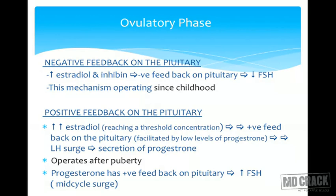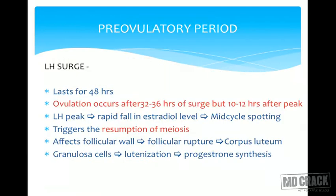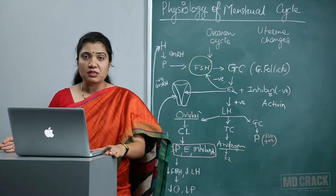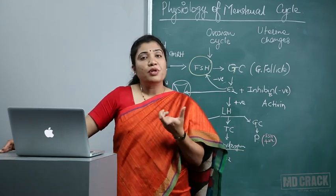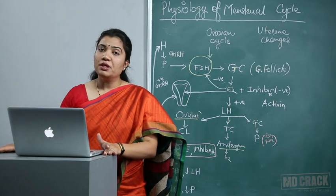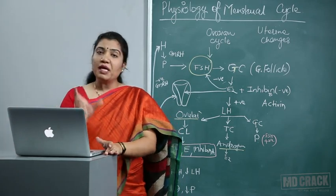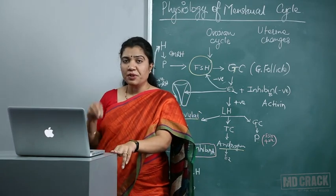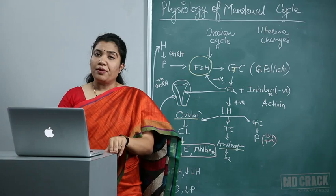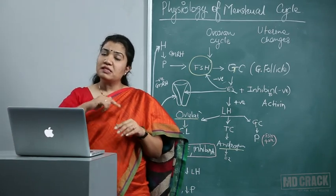The mid-cycle LH surge lasts 48 hours. Ovulation occurs after 32 to 36 hours of the surge onset — a very important MCQ asked repeatedly. If the question asks how many hours after the LH peak, the answer is 10 to 12 hours. The LH peak leads to a rapid fall in estradiol, which may cause mid-cycle spotting — many females report one or two spots around day 14 or 15 of their cycle.